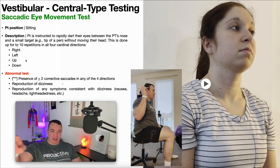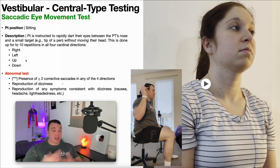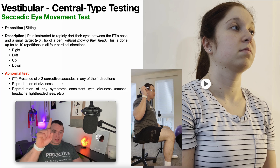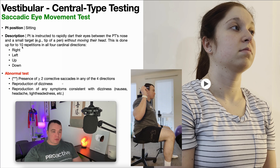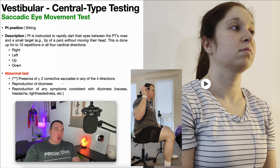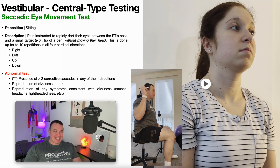Rather than a smooth movement, the eyes rapidly move from one target to the next. The targets are my nose and the tip of the pen, assessed in all four directions. Textbook protocol says up to ten repetitions per direction, but in practice we usually do about two to four repetitions to get a sense of whether movement is normal or not.